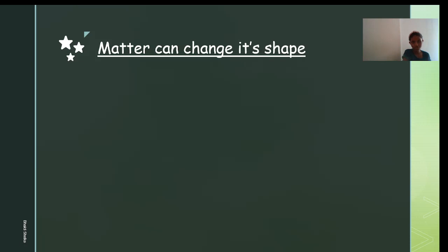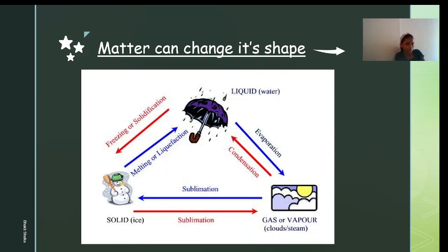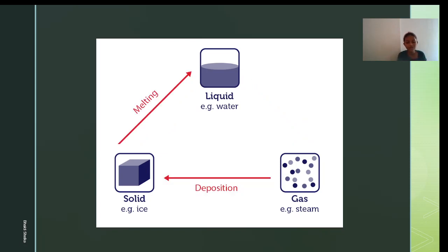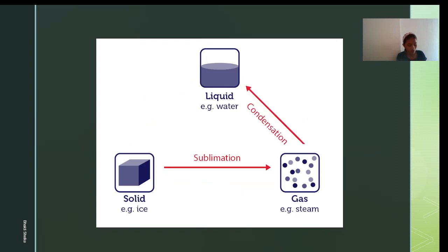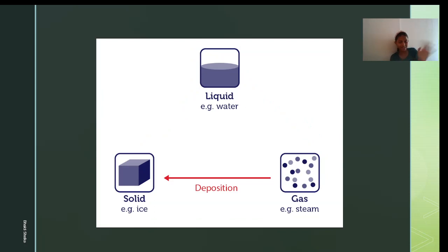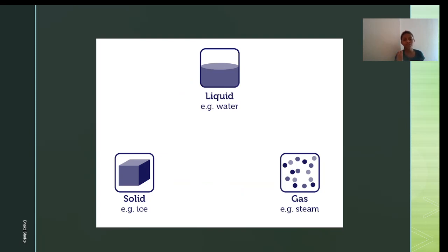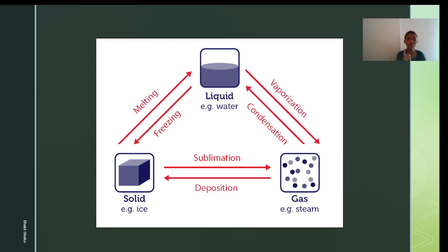Matter can change its state. Looking at this chart: gas converts to solid by deposition; solid converts to liquid by melting; liquid converts to gas by evaporation; solid converts directly to gas by sublimation; gas converts to liquid by condensation; and liquid converts to solid by freezing or solidification.